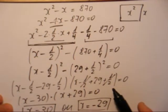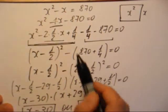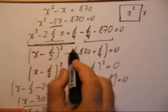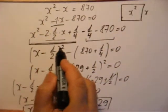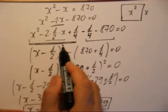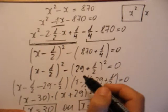Évidemment à l'époque le nombre négatif avait du mal à exister. Ils sont apparus bien plus tard. Cette méthode-là, quand on a complété ici ce carré, ce carré, c'est un carré. Ça s'appelle la méthode de la complétion du carré.